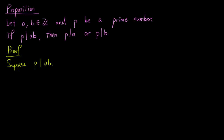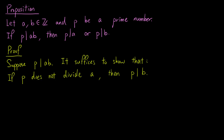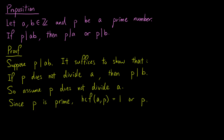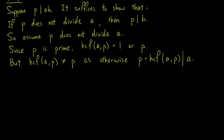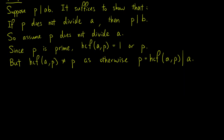To prove this result, suppose p divides a times b. It suffices to show that if p does not divide a, then p divides b. So assume p does not divide a. Since p is prime, the HCF of a and p is either 1 or p, but the HCF of a and p is not equal to p, since otherwise p would divide a. So the HCF of a and p is 1.